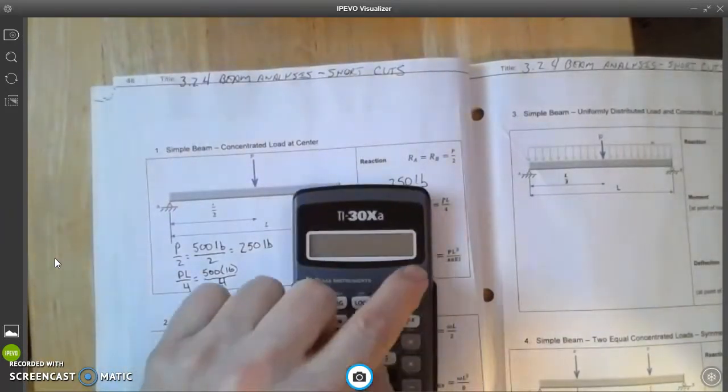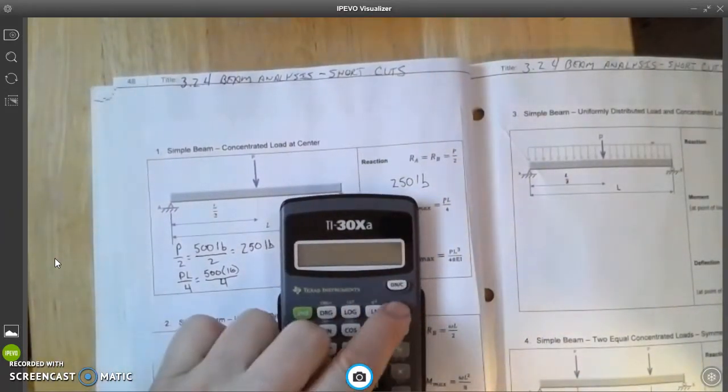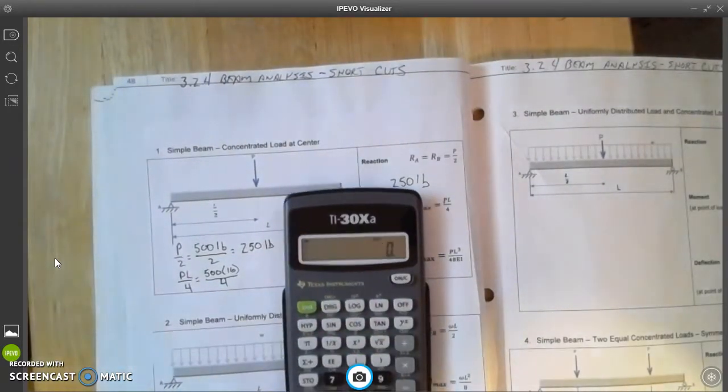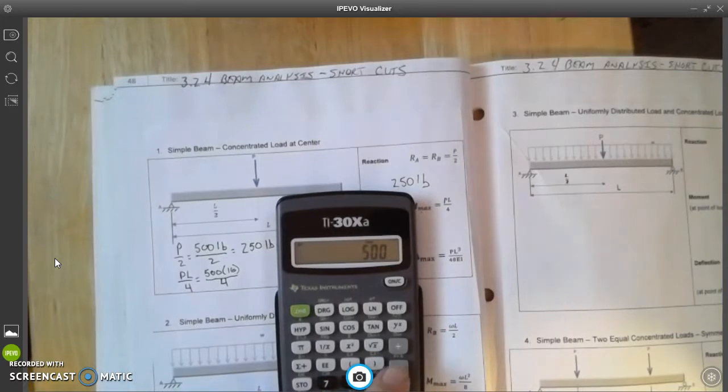So on our calculator here... there we go. I'm going to take 500 and multiply that times 16.